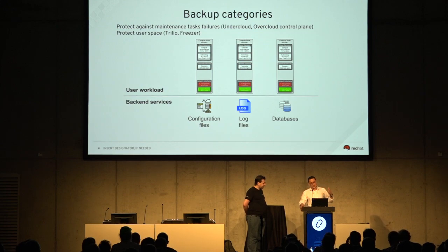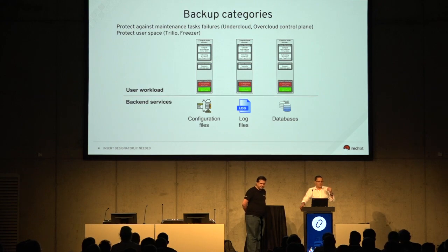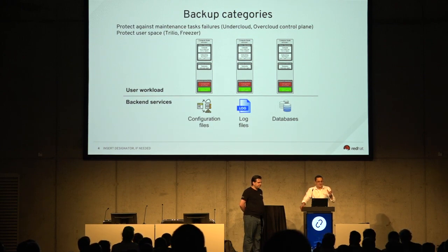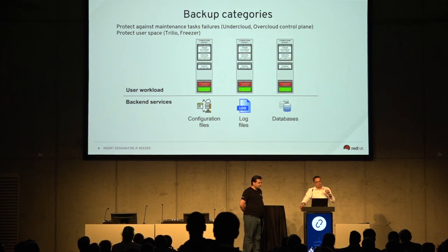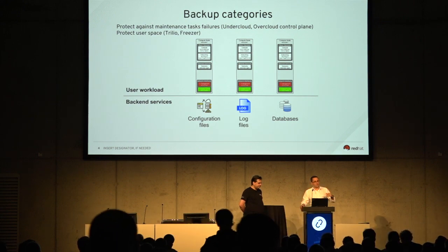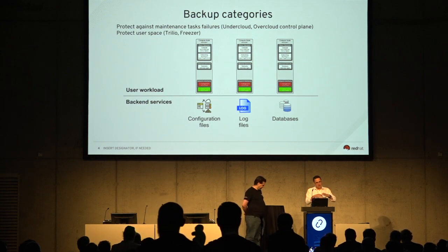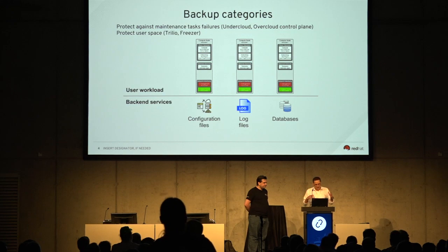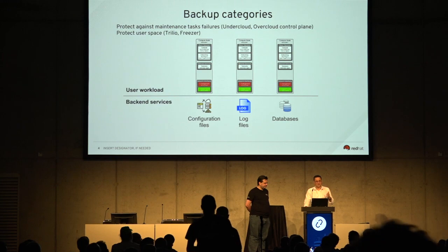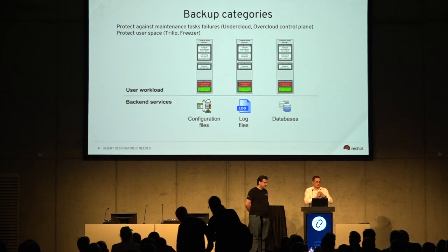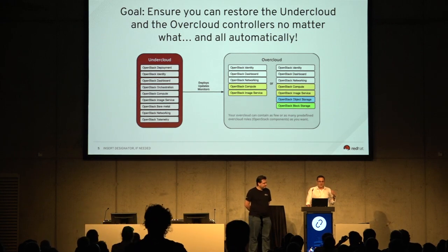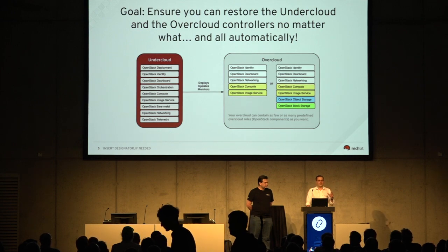We can back up the user workload — all our Nova tenants — but in this case we are not going to do that. We are going to back up what we call backend services or control plane services to avoid the risk of breaking our controllers. For example, when running an upgrade we might break our cloud and want to roll back. What we back up is essentially config files and databases — the most important things — with the goal of ensuring we can restore an undercloud and overcloud controllers no matter what.